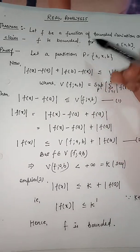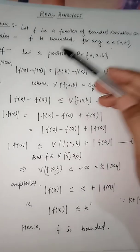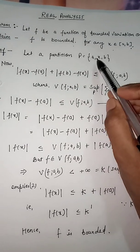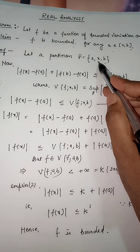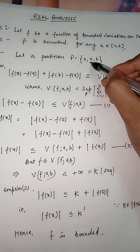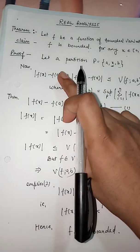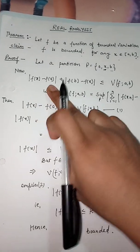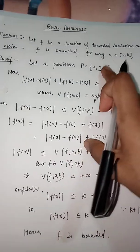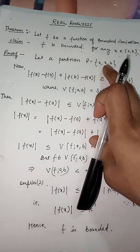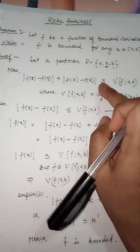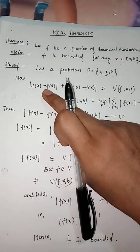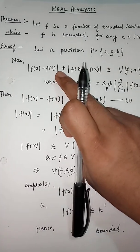To prove this theorem, consider a partition of [a, b] with an intermediate point x. We look at the difference: the modulus |f(x) - f(a)|. This condition exists when x belongs to the closed interval [a, b], so the key condition is |f(x) - f(a)|.